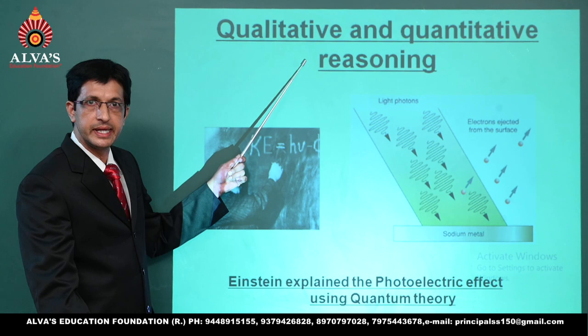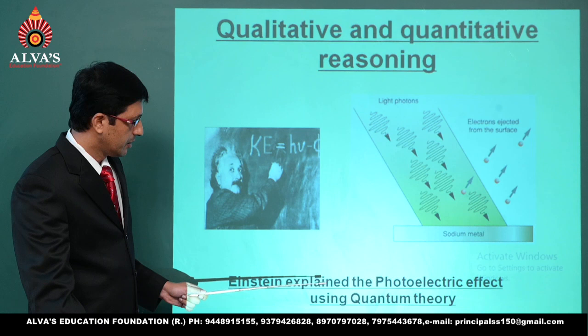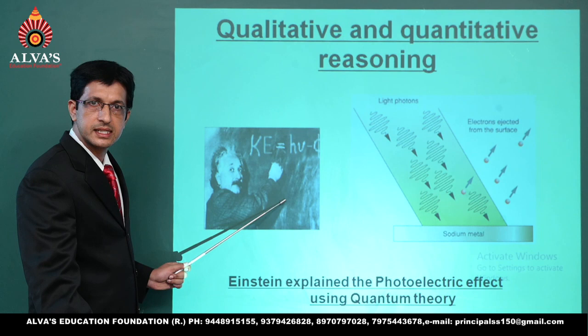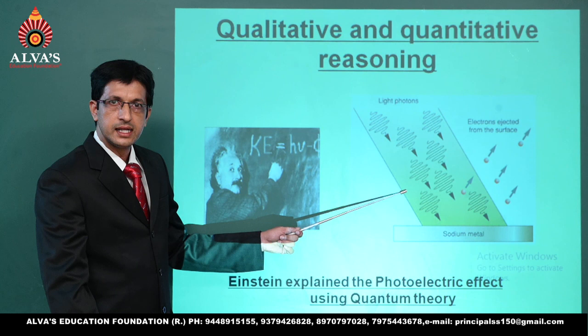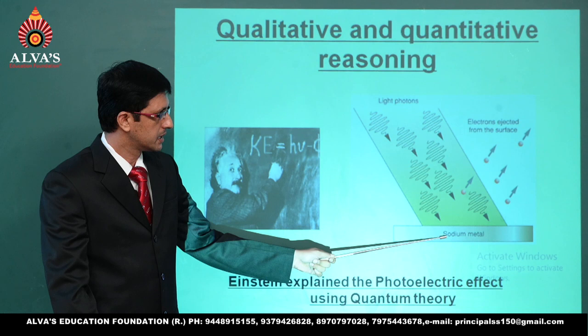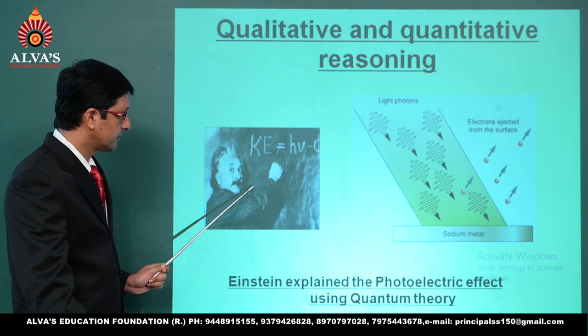The third step — qualitative and quantitative reasoning — has an example based on the photoelectric effect using quantum theory, given by the famous scientist Albert Einstein. He said that when light photons are made incident on suitable metal surfaces, electrons were found to be ejected from the surface. This explanation fetched him the Nobel Prize in Physics.